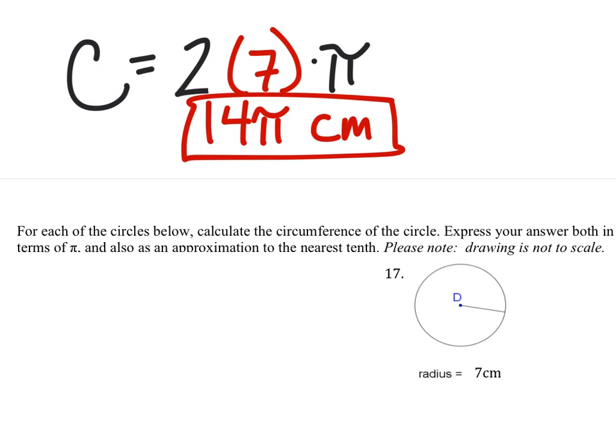To find the approximation, we take 14 and multiply it by pi, which would give me 44.0 centimeters.